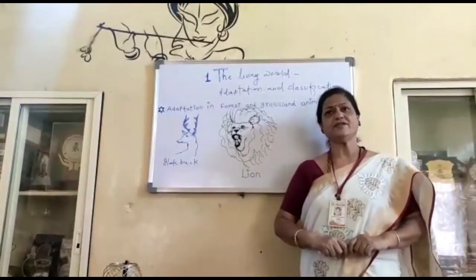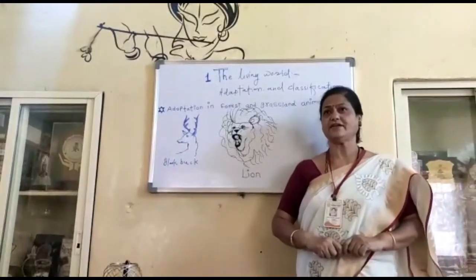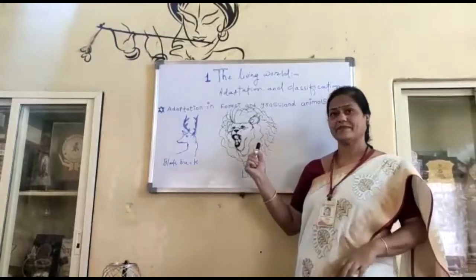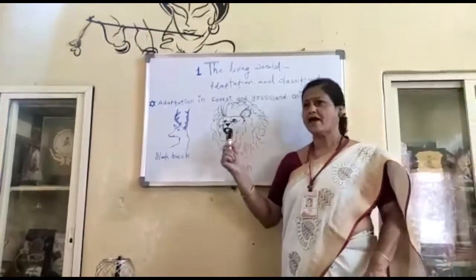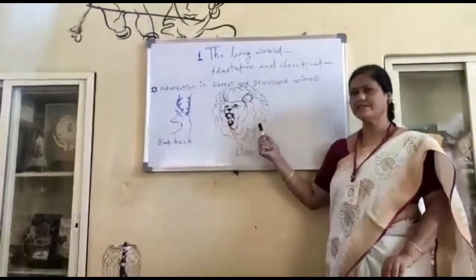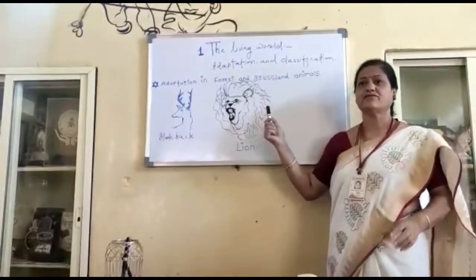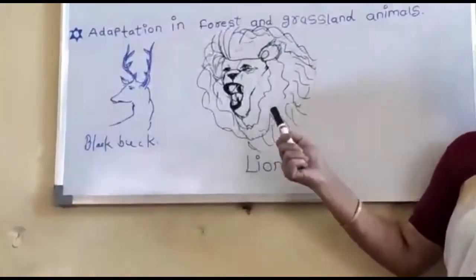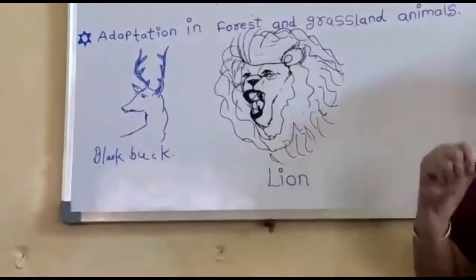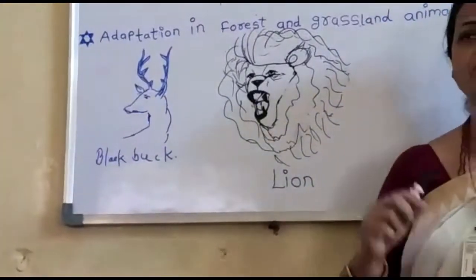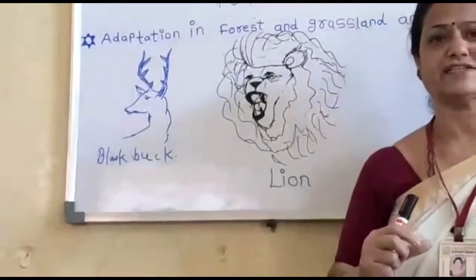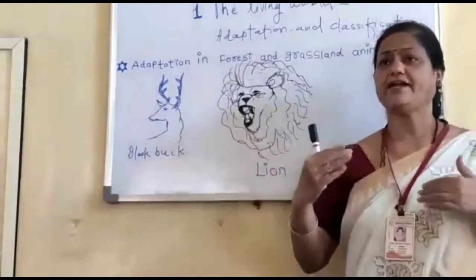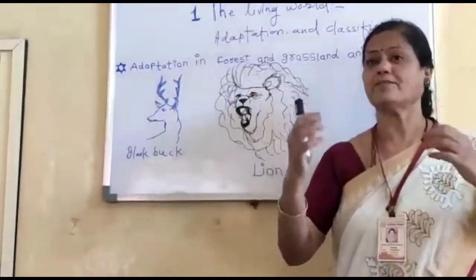Adaptations in forest and grassland animals: Carnivorous animals like the wild dog, fox, tiger and lion have strong legs to run fast and capture their prey.